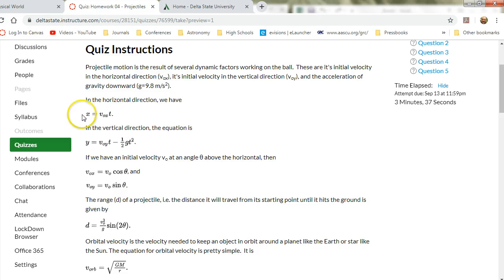This one basically says we start with a horizontal direction X, which is our distance. So X equals the velocity in X, the initial velocity in X times time.